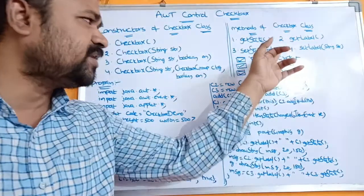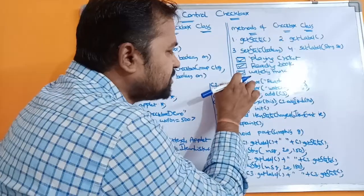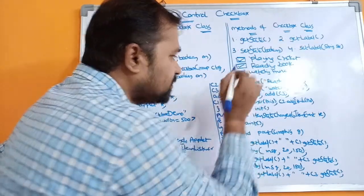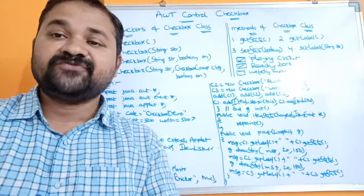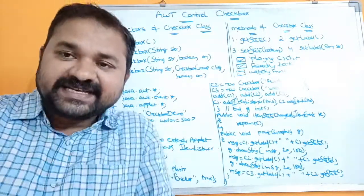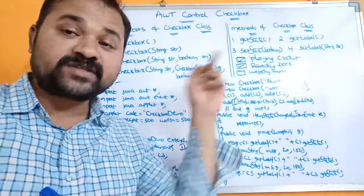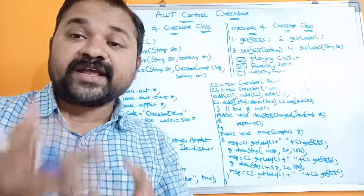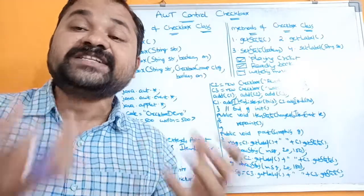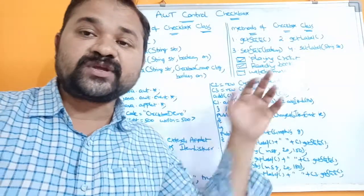Let us assume that our hobbies are only the first two — playing cricket and reading books. If we click on this checkbox one more time then this tick mark will disappear. So clicking on the checkbox will change the state from on to off, and again it changes from off to on. On means the corresponding checkbox is checked, also known as true. Whereas off means the corresponding checkbox is unchecked — that means the checkbox is cleared, also known as false.